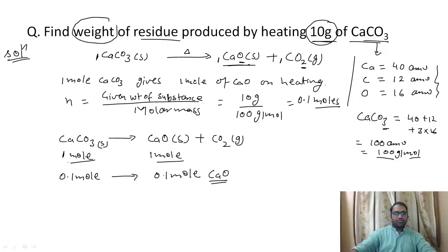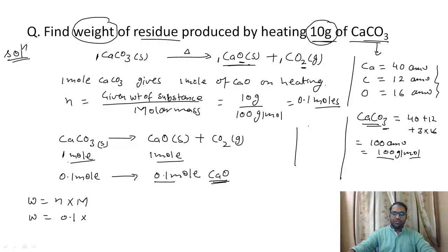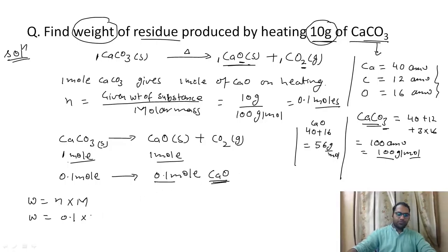Now we have to find the weight of the residue. To convert moles into weight, we use: weight equals number of moles multiplied by molar mass of calcium oxide. The number of moles is 0.1. The molar mass of calcium oxide is 40 (for calcium) plus 16 (for oxygen), which gives 56 g/mol. So weight equals 0.1 times 56, which gives 5.6 grams.